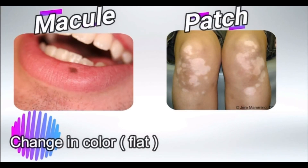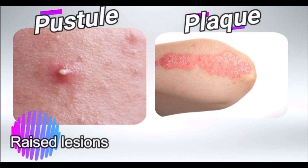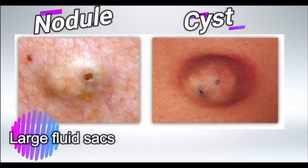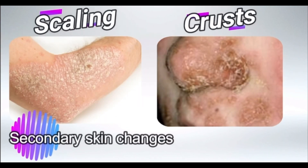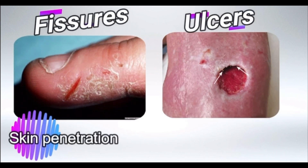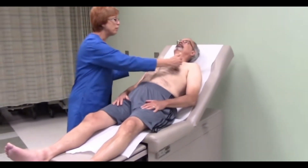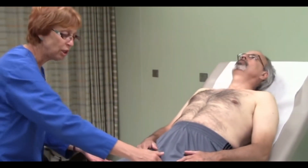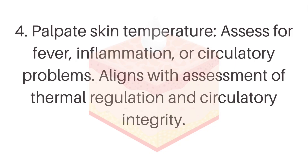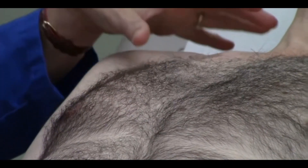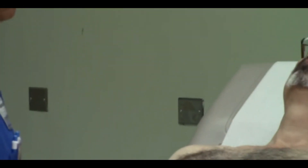Step 3: Inspect for lesions. Early detection of wounds, rashes, or infections allows for prompt intervention and prevents complications. Aligns with wound assessment and infection control principles. Step 4: Palpate skin temperature. Assess for fever, inflammation, or circulatory problems. Aligns with assessment of thermal regulation and circulatory integrity. Step 5: Palpate for texture and moisture. Detects dryness, dehydration, infection, or skin disorders. Aligns with assessment of skin integrity and comfort.